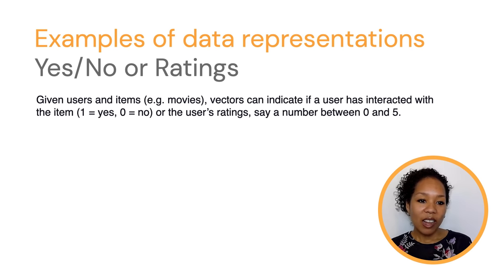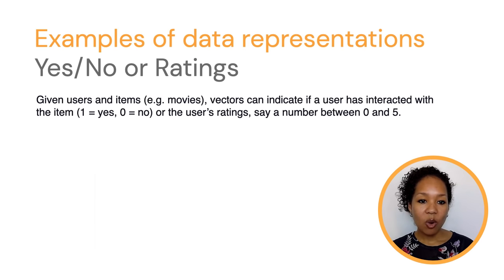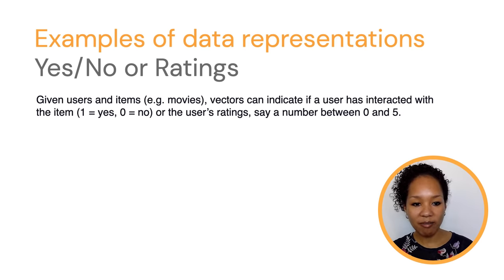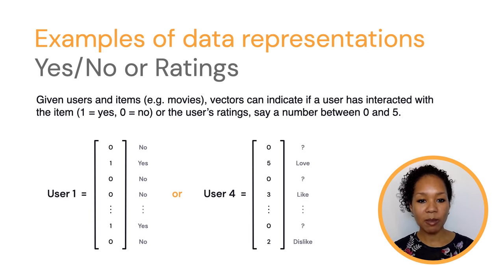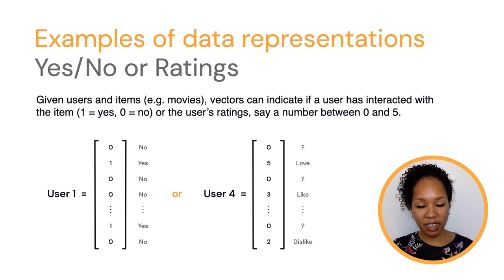Another example: imagine you have some users and some items, like movies. Maybe you'd like to indicate whether a user has watched a movie — a yes or no — or maybe that user has given the movie a rating, say between zero and five. You can take those ratings and assemble them into a vector — list your movies, movie one, movie two, and so on, and next to each movie, stick the user's rating. These are some common examples of how you can take data and represent it using the basic idea of a vector from linear algebra.